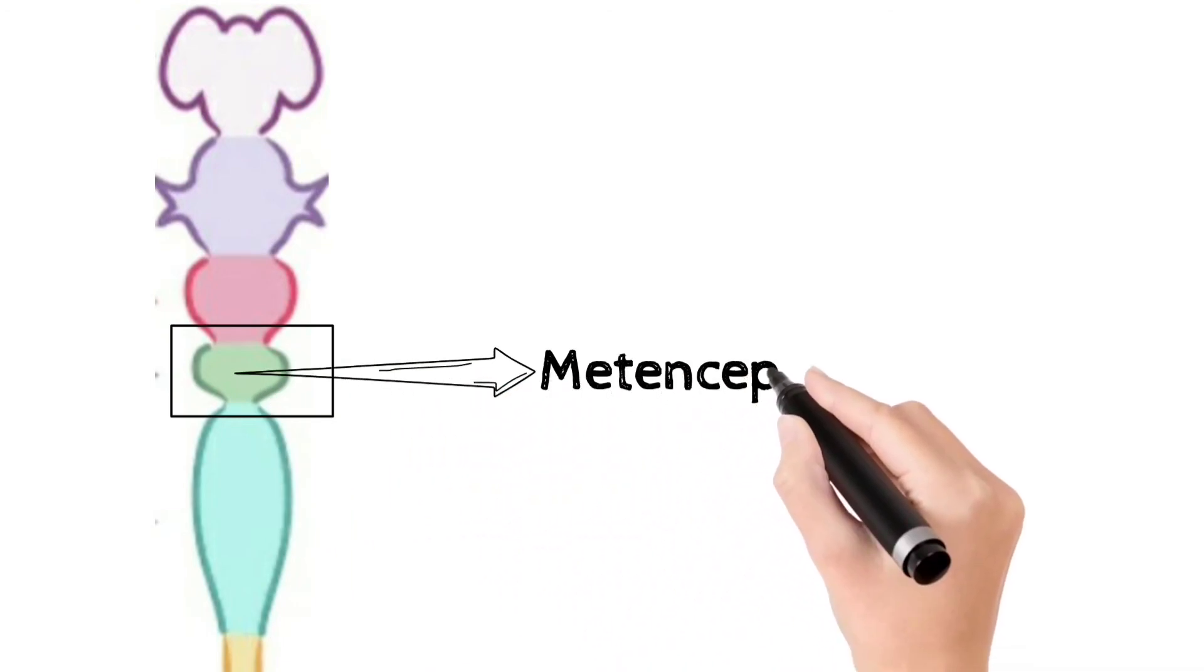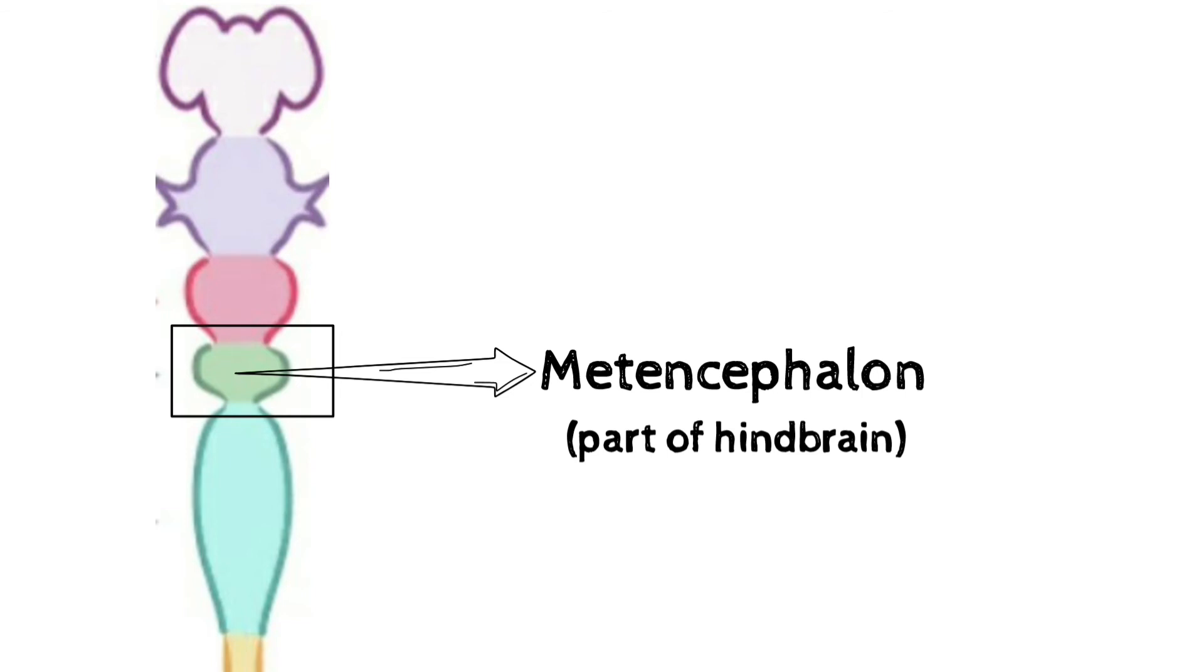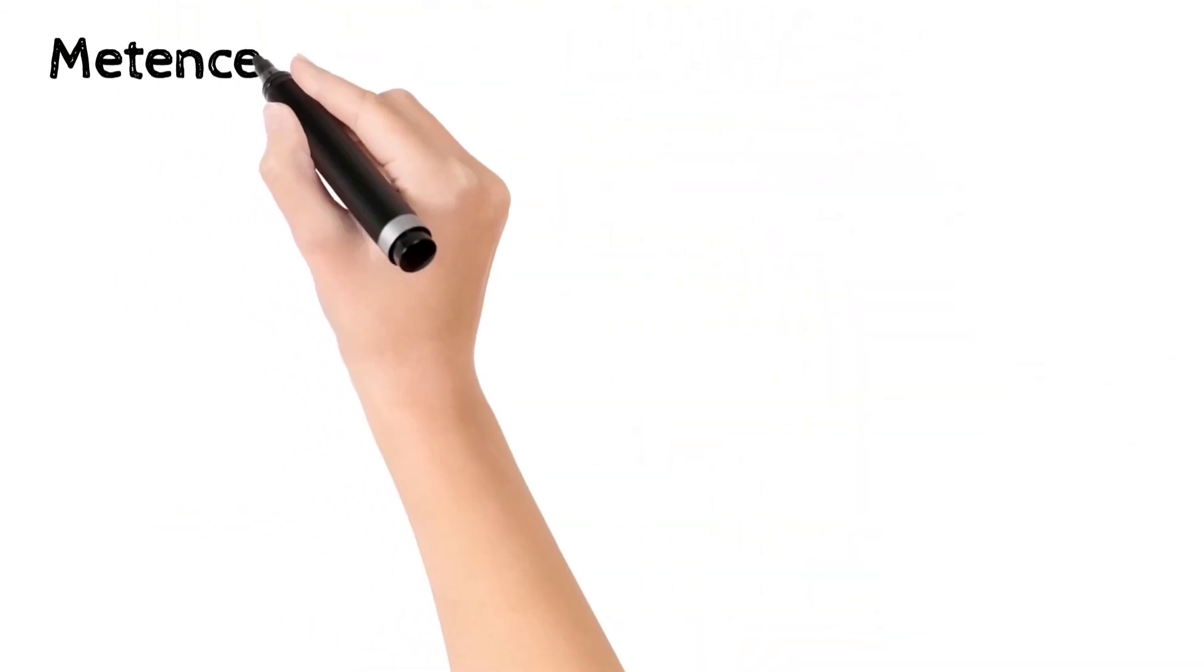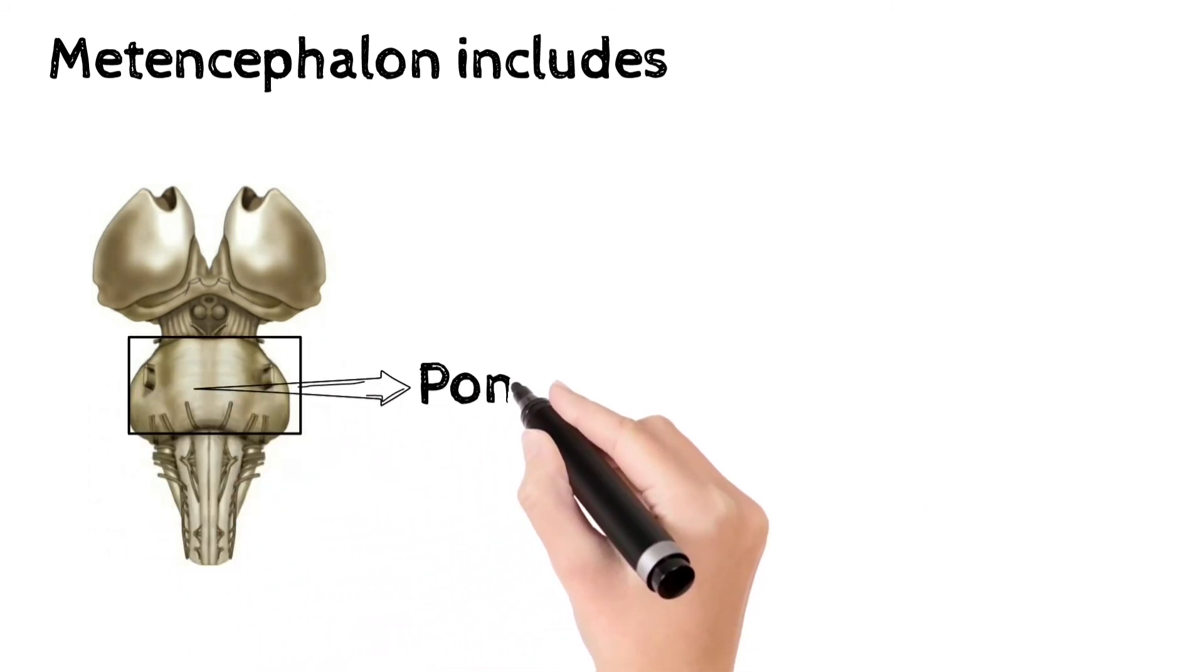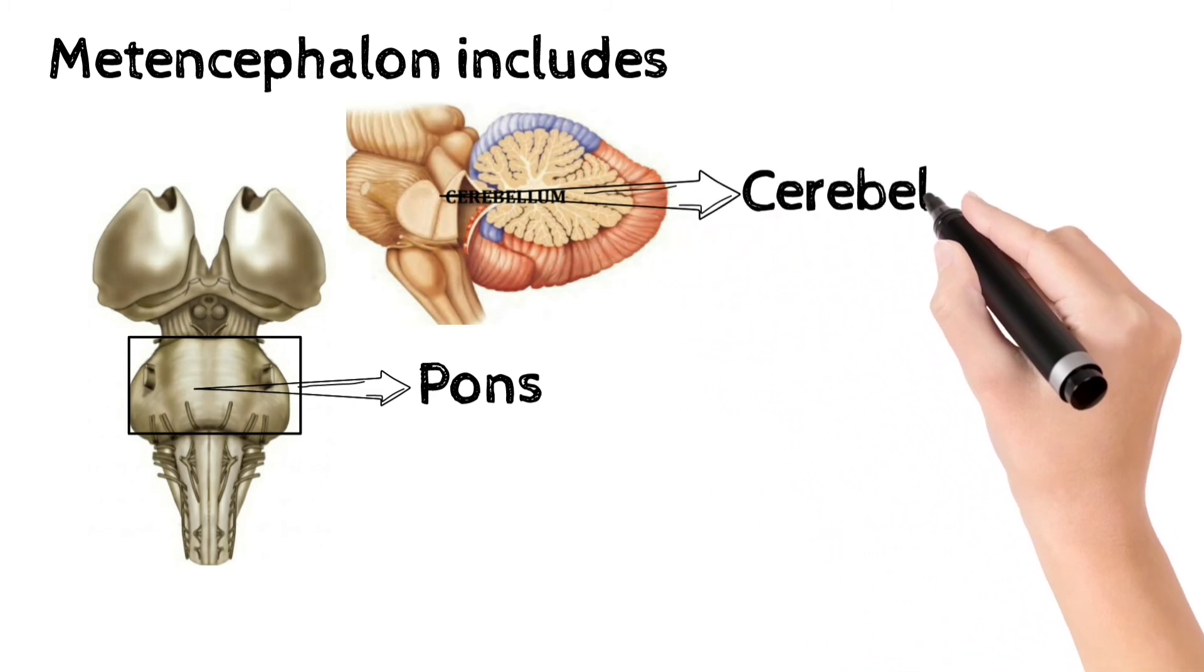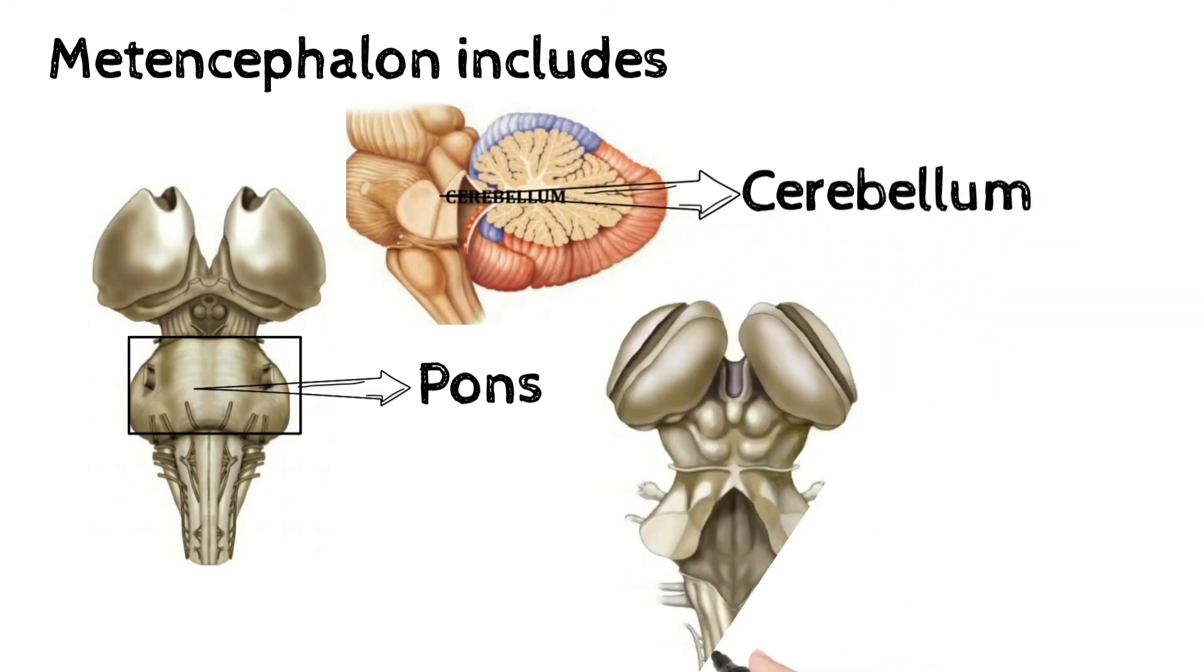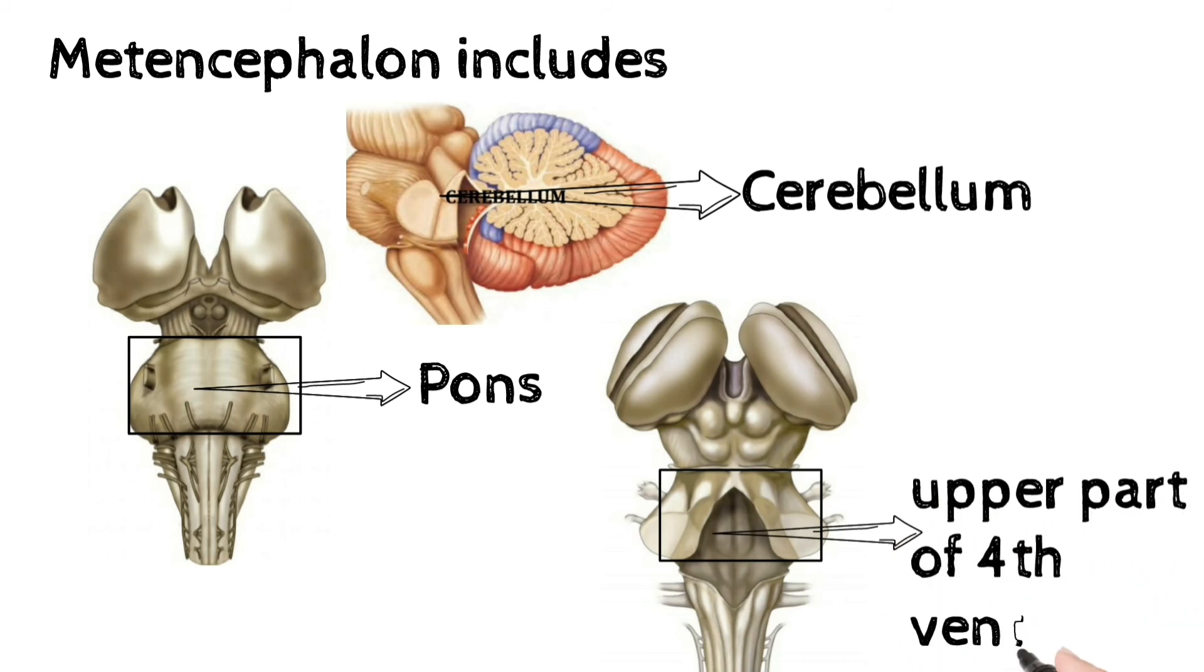Metencephalon part of hindbrain. Metencephalon includes structures: pons, cerebellum, and upper part of 4th ventricle.